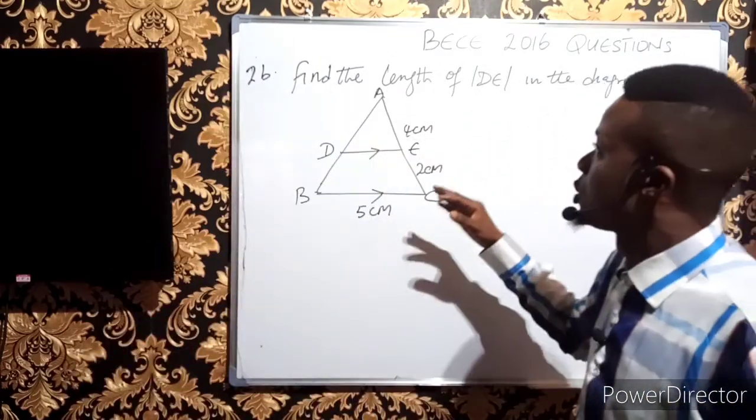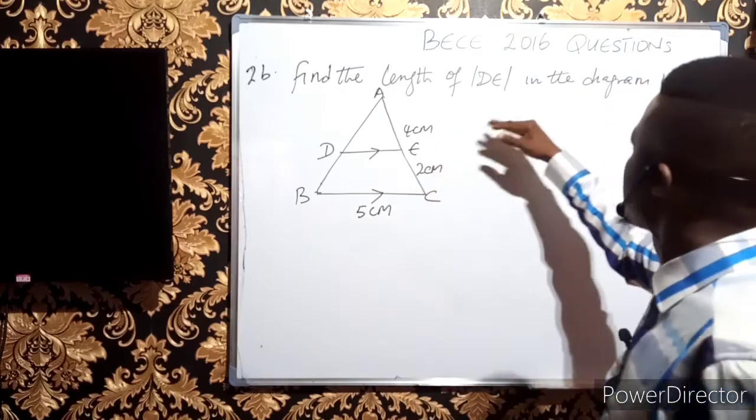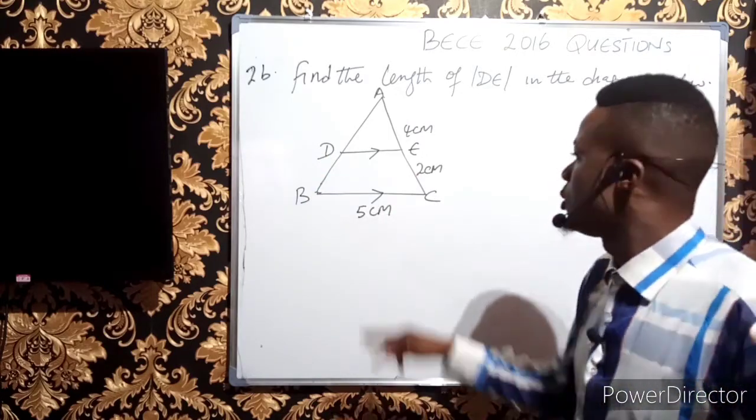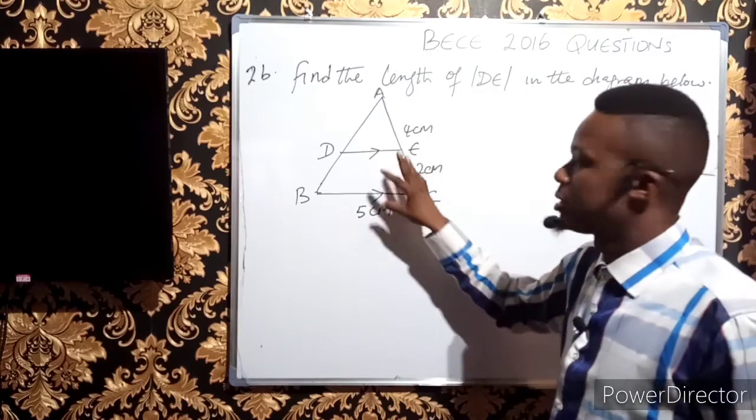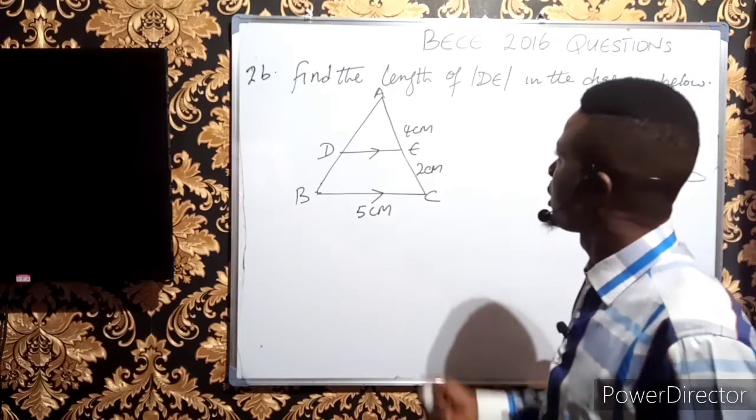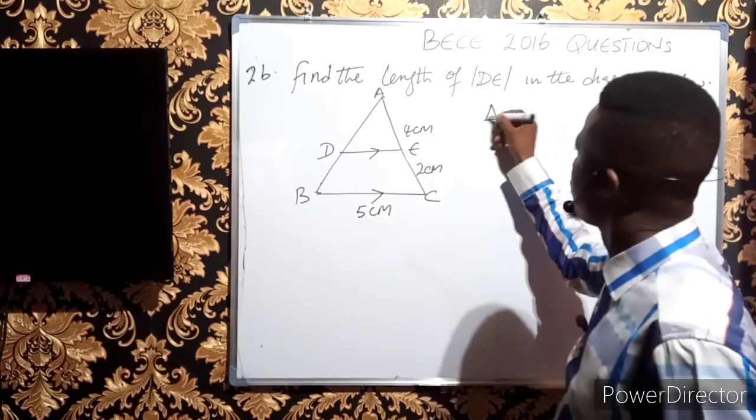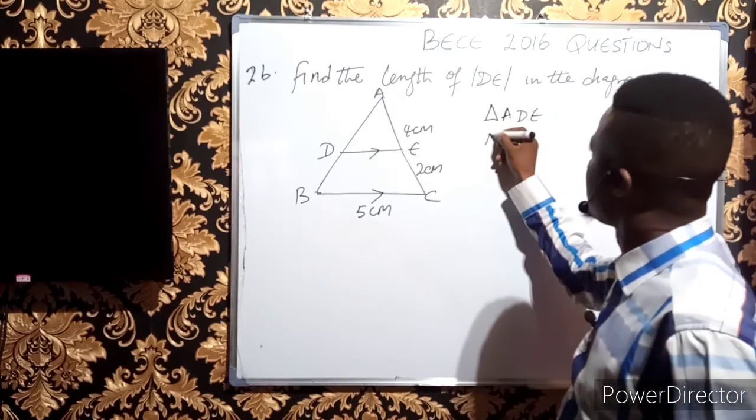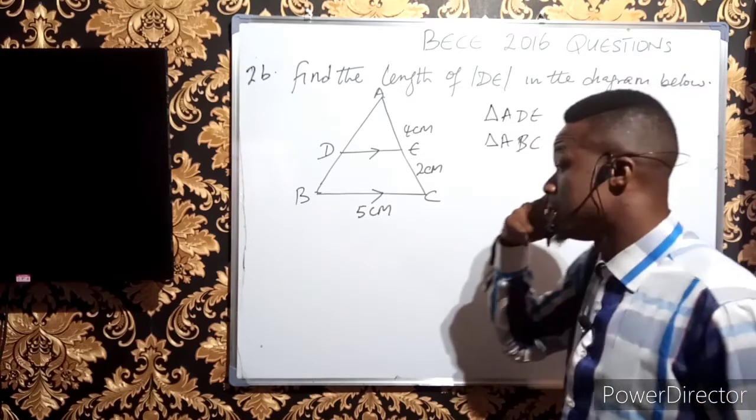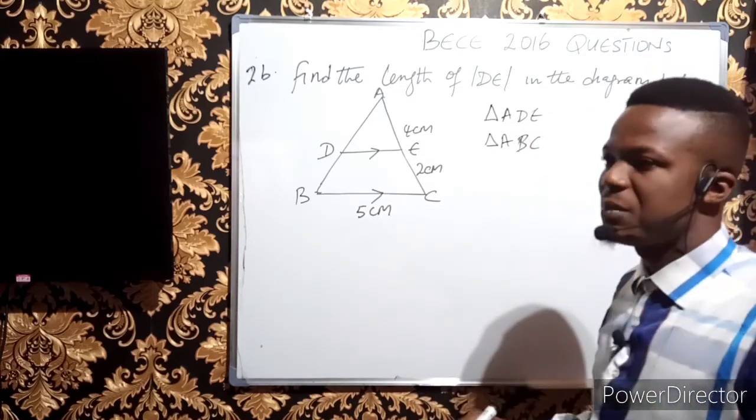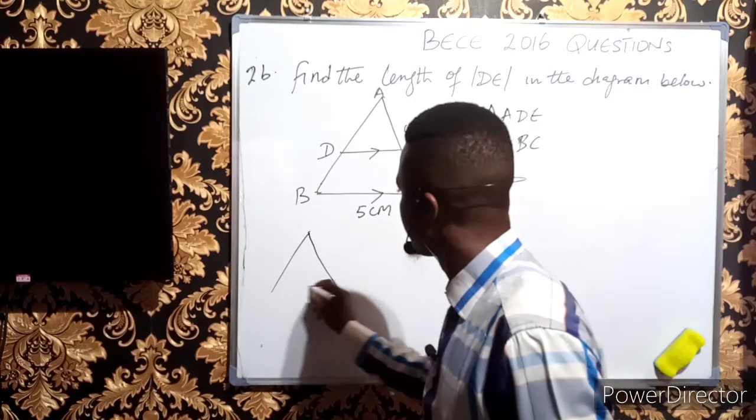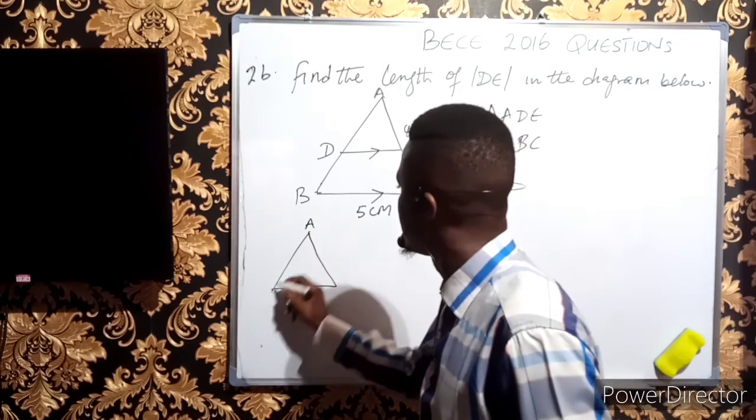Question 2b asks us to find the length DE in the diagram below. Looking at the diagram with the symbols showing similar triangles, we have triangle ADE and triangle ABC. ABC is bigger than ADE, but they are similar, meaning corresponding sides are proportional.